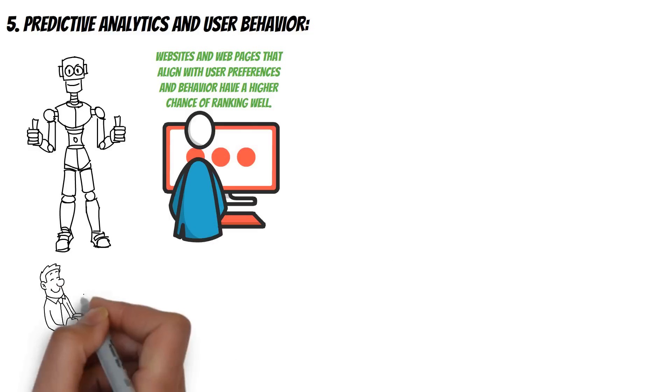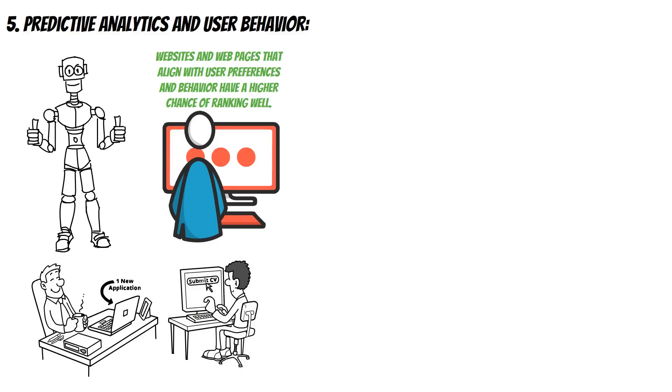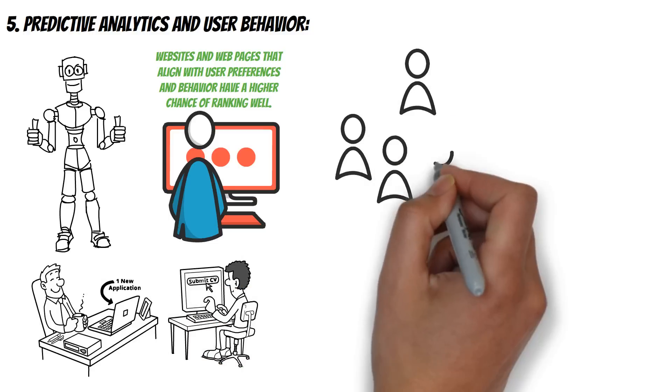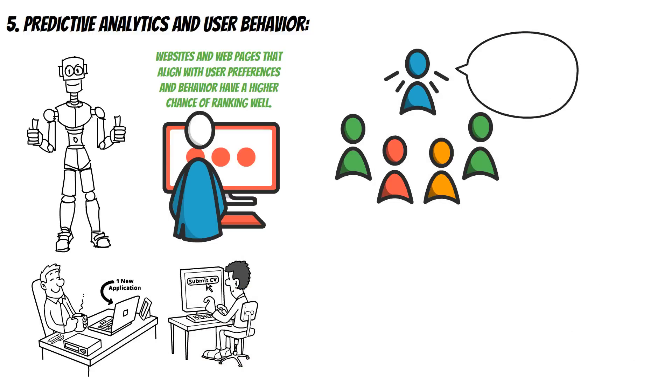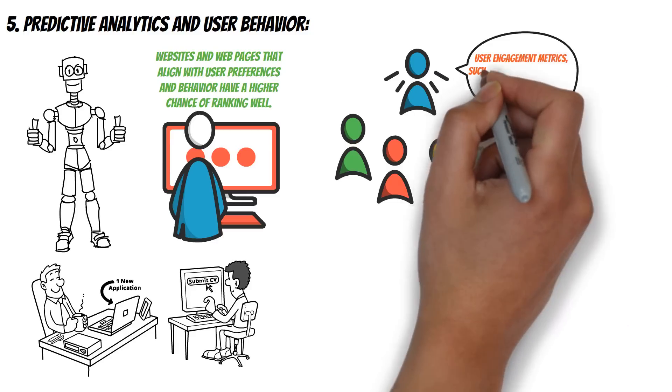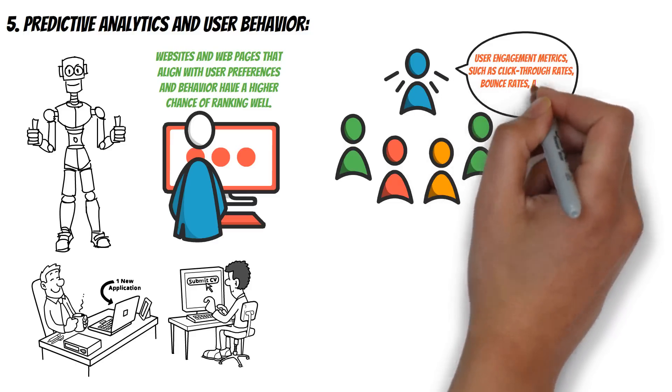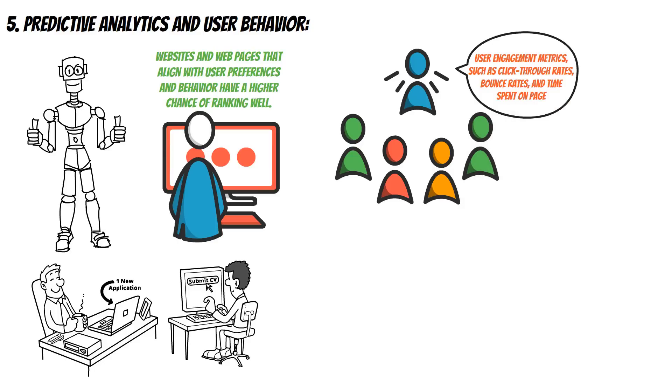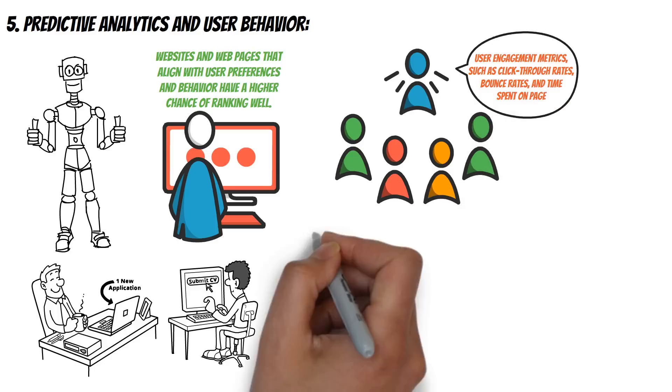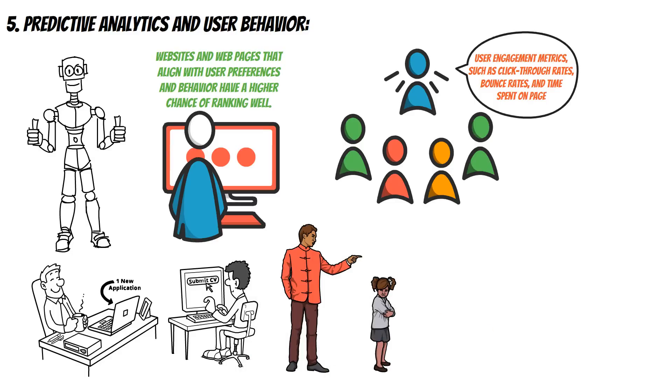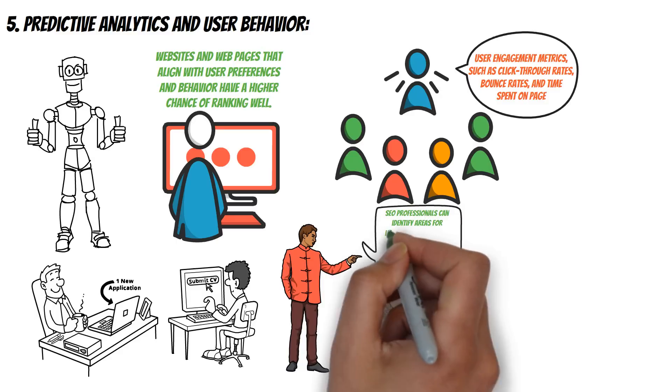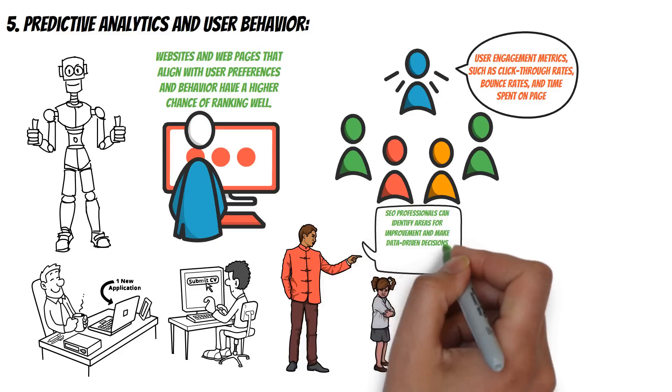Predictive analytics can help SEO professionals understand how users interact with their website and content. They can gain insights into user engagement metrics such as click-through rates, bounce rates, and time spent on page, which can be used to optimize the website's structure and content. By analyzing user behavior, SEO professionals can identify areas for improvement and make data-driven decisions to enhance the user experience.